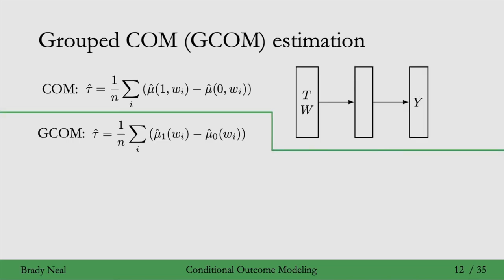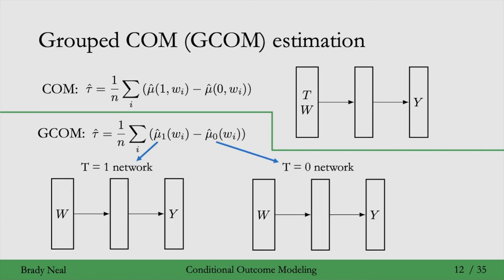So if we draw a neural network again, we have a single neural network for the COM estimator, and the single neural network takes both treatment and w as input to predict y. In contrast, for g-COM estimation, we would have two neural networks, one neural network for the treatment equals 1 group. So all the data that has t equals 1 will be used to fit this t equals 1 network, and another network for the t equals 0 data. That whole group of data will be used to fit the t equals 0 network. And then we don't need to use t as input to these networks. They only need to take w as input. t is encoded into the fact that we're using two different networks.